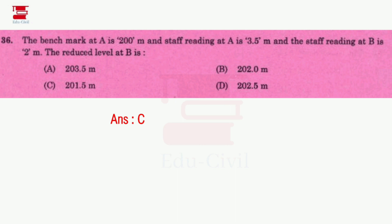Next question: the benchmark at A is 200 meters, staff reading at A (backside) is 3.5 meters, and staff reading at B (foresight) is 2 meters. Find the reduced level at B using the HI method. The answer is 201.5 meters — option C is correct.